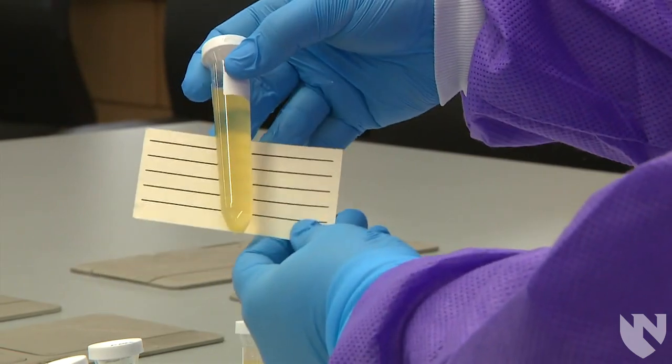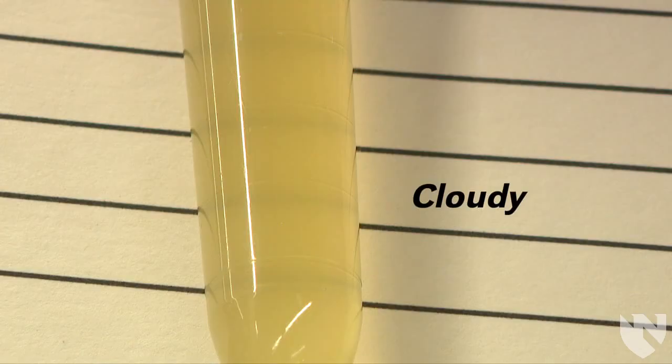Next, we have a cloudy urine. If there are visible dense particles and the lines become blurred or not visible at all, we report this as cloudy.